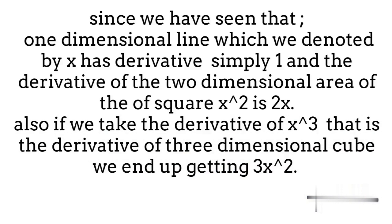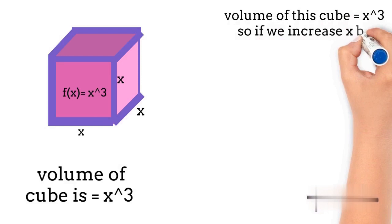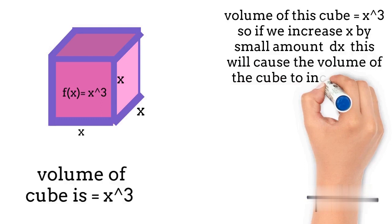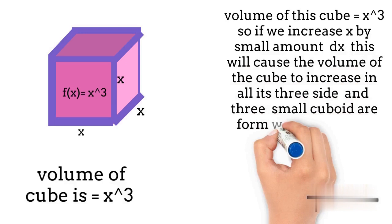We see that volume of this cube is equals to x cube. So if we increase x by small amount dx this will cause the volume of the cube to increase in all its three dimensions and three small cuboids will form with height and length of same size that is x and the width of this cuboid is dx.